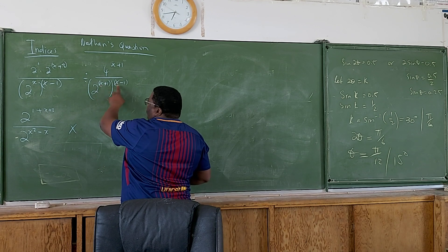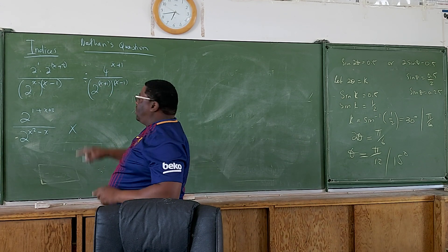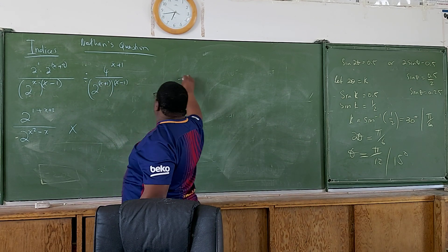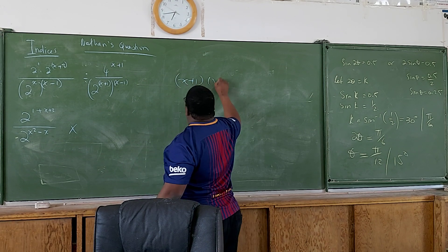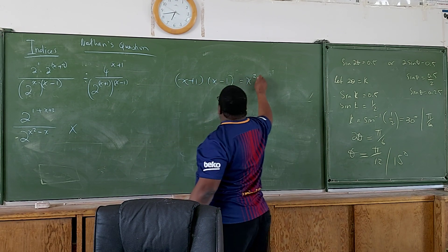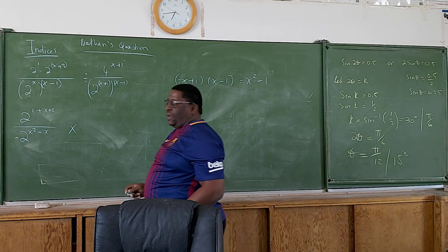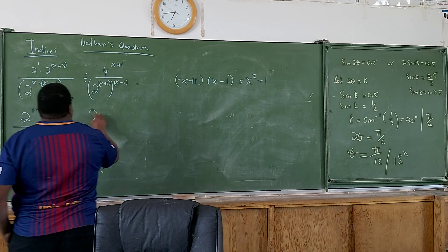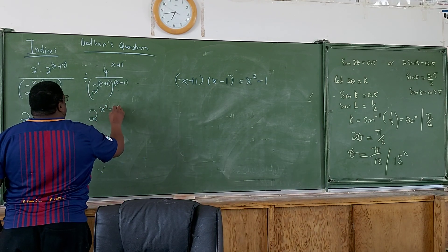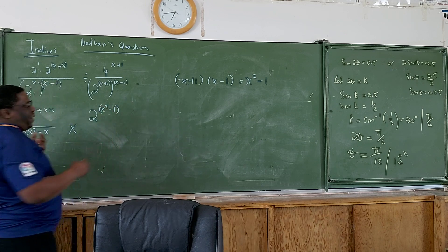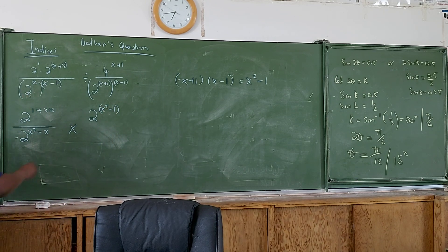But here you should recognize the difference of two squares. So if you multiply out these two brackets, you know you have got x plus 1, x minus 1. You should get x squared minus 1 eventually when you multiply it out. So I'm going to put that on top as 2 raised to the power of x squared minus 1. I'm putting it in brackets anyway.